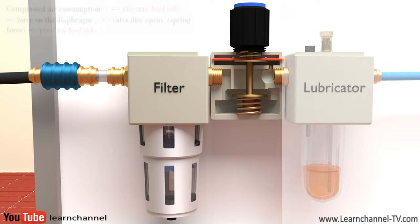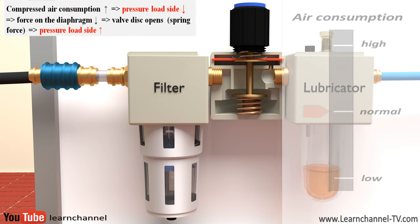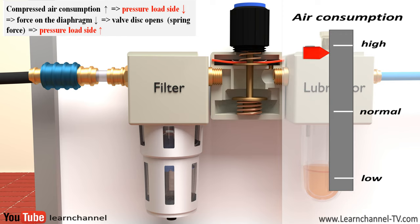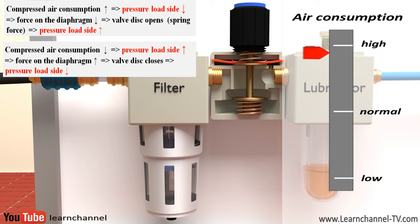Whenever more compressed air is consumed, then the pressure might drop on the load side. Therefore, the force acting on the diaphragm decreases. Due to the spring force, the diaphragm is pushed together with the valve disc in such a way, permitting more airflow to the secondary side and increasing the pressure again. If the outlet pressure is too high due to less consumption, then the load pressure increases. Therefore, the force acting on the diaphragm increases, the valve disc closes, less air flows, and the output pressure must decrease.